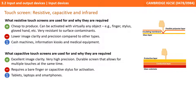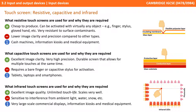Finally, infrared touch screens provide excellent image quality, have an unlimited touch life, and scale in size very well. However, they are sensitive to interference from ambient light, water, and snow. They can be used for very large-scale commercial displays, for example at concerts or on the side of roads, and are also often found in use at kiosks and medical equipment, much like resistive screens.